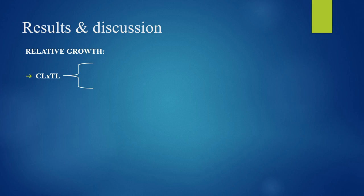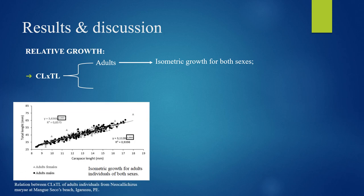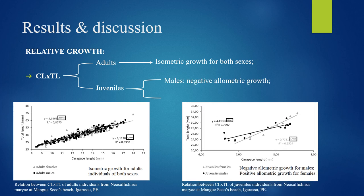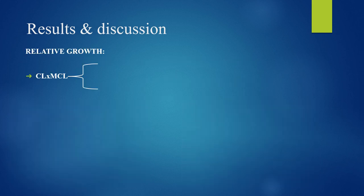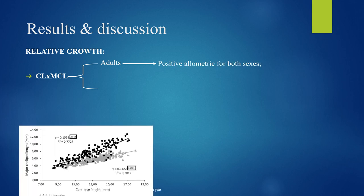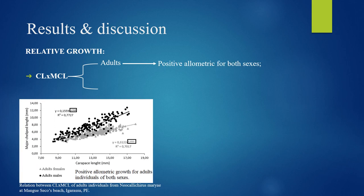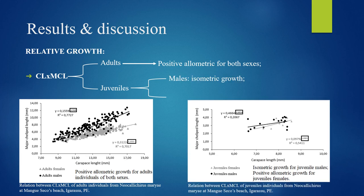For the relative growth, the relation between carapace length and total length among adults showed isometric growth for both sexes. Among juveniles, males showed isometric growth and females showed positive allometric growth.